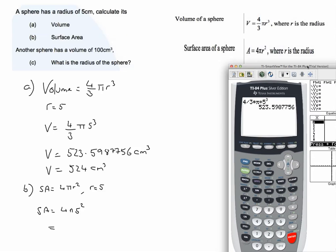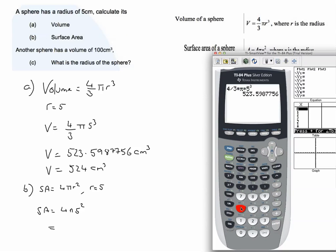So we've got the surface area equal to four times pi times five squared. I'll get my calculator back on the screen. I'm going to do four times pi times five to the power of two. Enter and I've got 314.15926544.